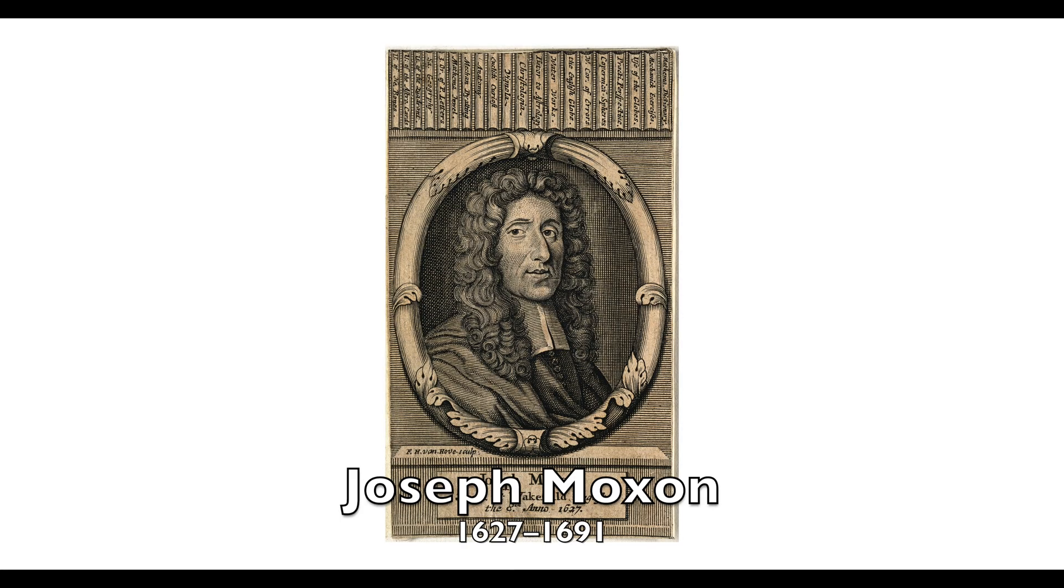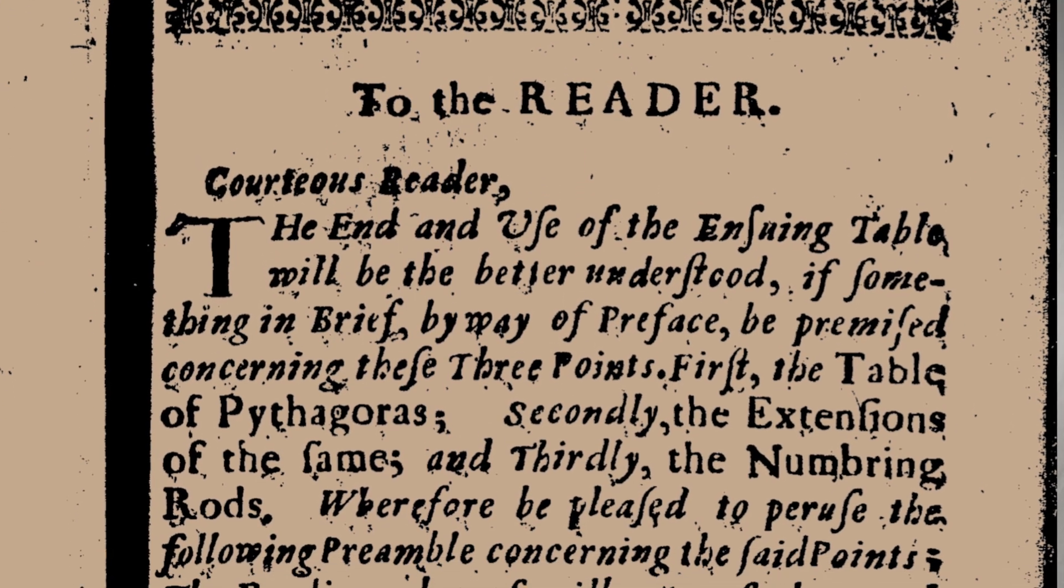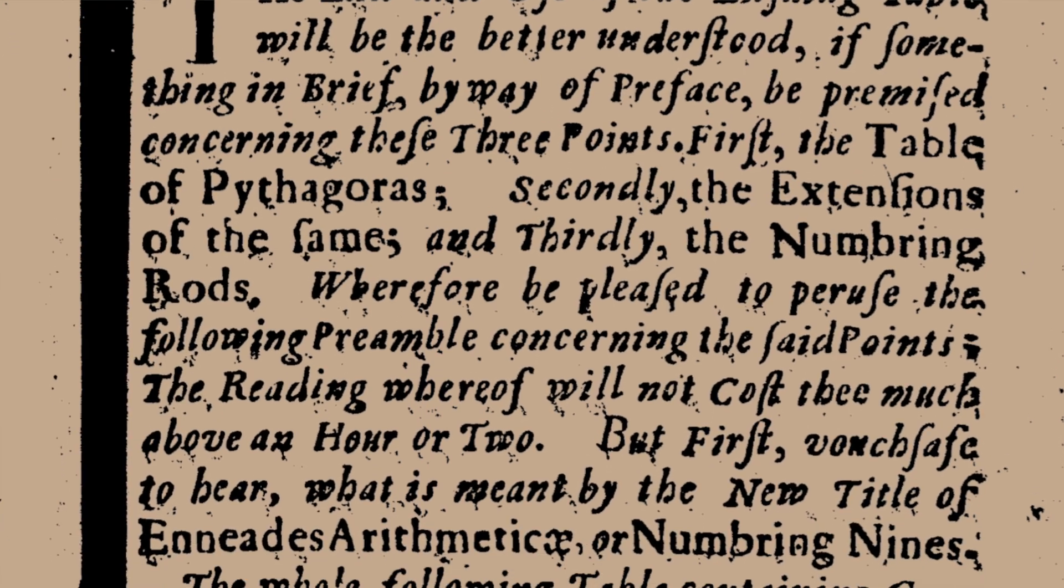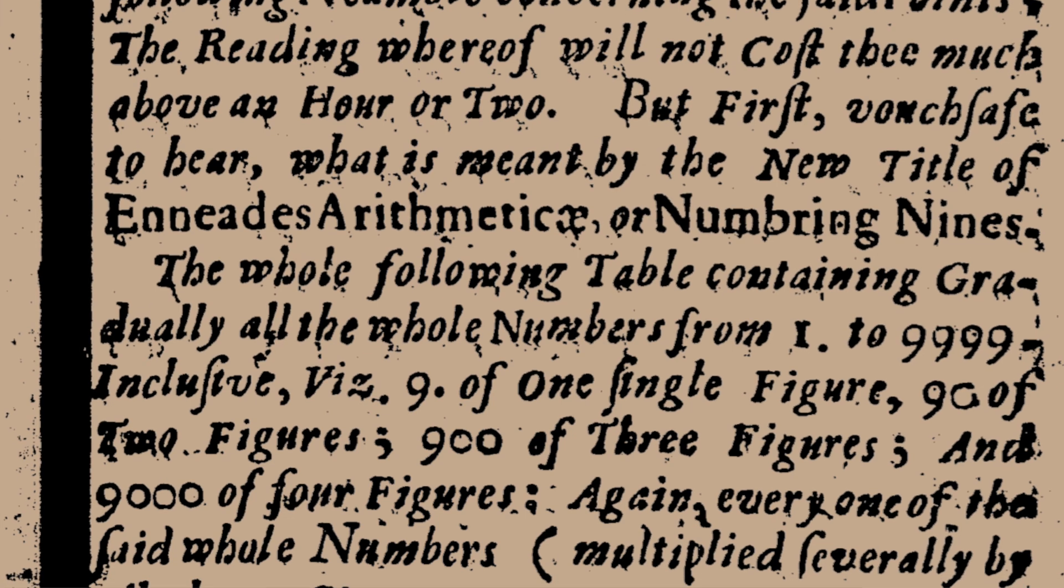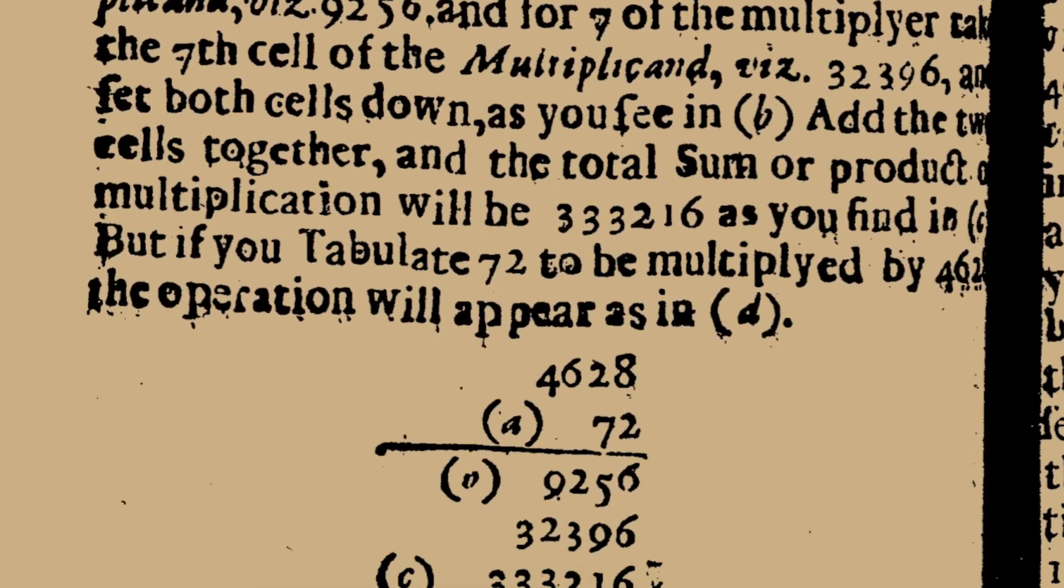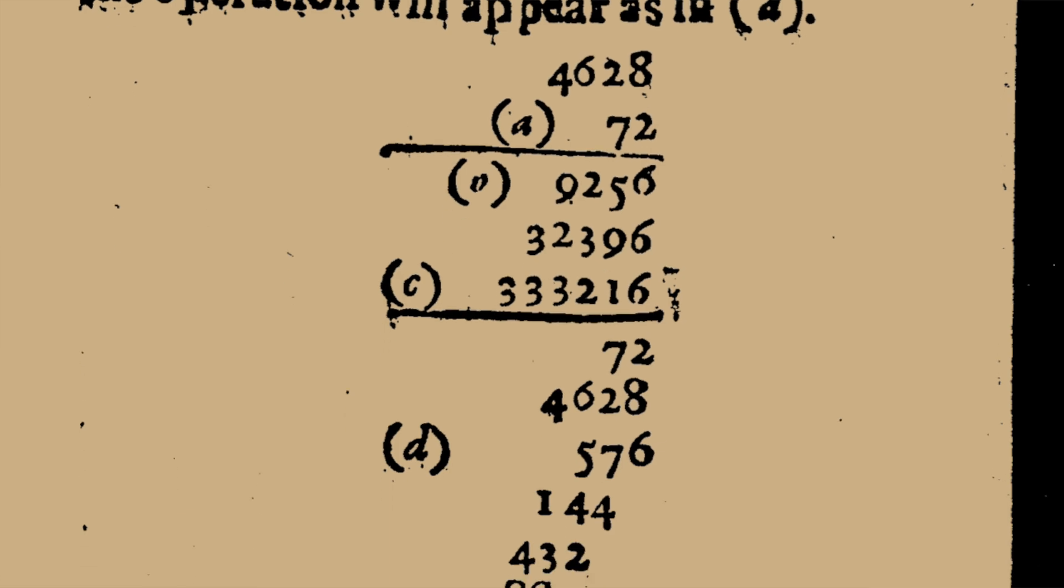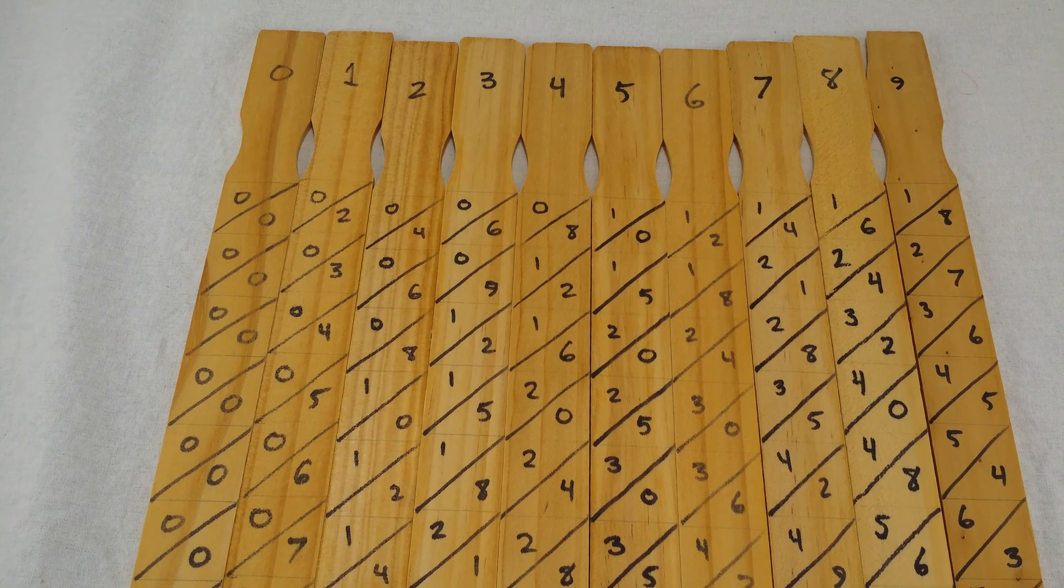Joseph Moxon was an English publisher, scientist, and maker of mathematical instruments. And by all accounts, Moxon was a Napier bones superfan. He wrote several books and printed them himself, teaching people how to use the bones. And he made and sold physical sets of Napier's bones in a shop in London. He wasn't really a traditional scientist, he didn't go to Oxford, not the standard academic type. He was a businessman, an entrepreneur. And eventually he did work his way into the high society. In 1678, he became the first tradesman elected fellow of the Royal Society.